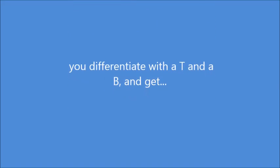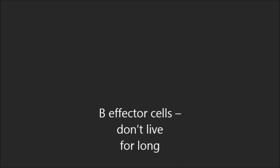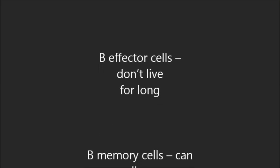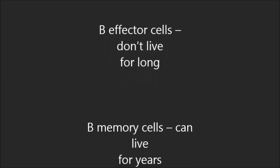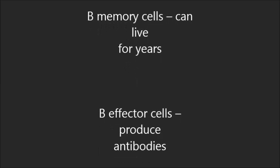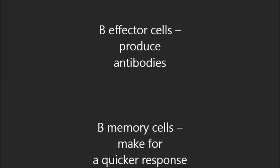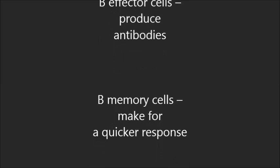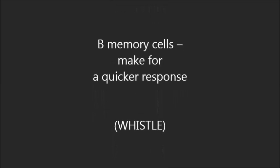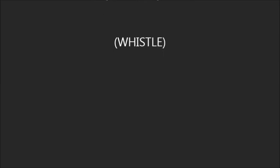With insulin-dependent diabetes, T cells differentiate and activate B-effector cells, which don't live long, and B-memory cells, which can live for years. B-effector cells produce antibodies, and B-memory cells make for a quicker response.